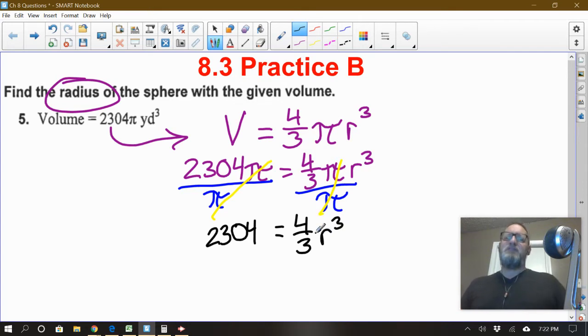All right. We're a little closer. If I want to figure out r, I need to get rid of this four thirds. The way to get rid of four thirds, we did talk about this in class, would be to multiply by the multiplicative inverse, the reciprocal. So we're going to multiply both sides by three fourths. That cancels out because that would end up being 12 over 12 and 12 divided by 12 is one, leaving me r to the third power all by itself.